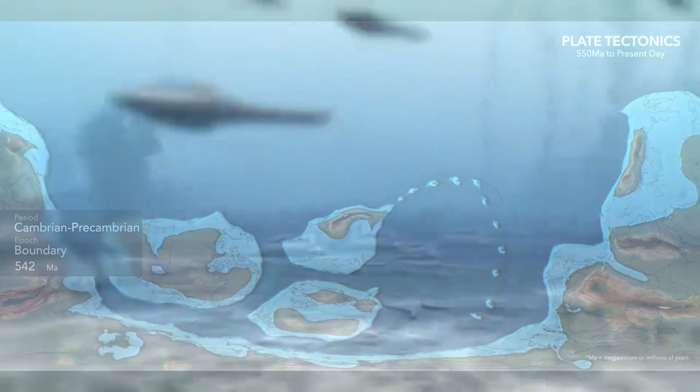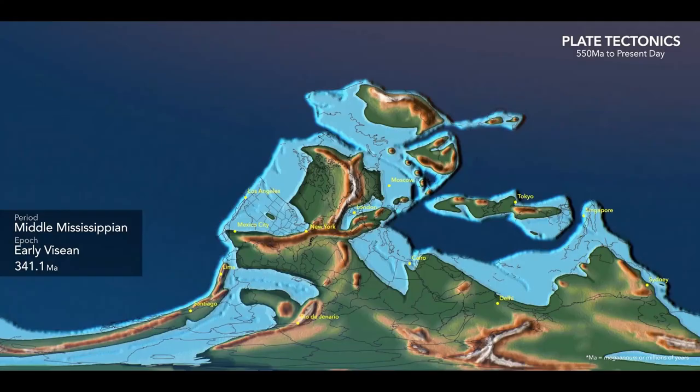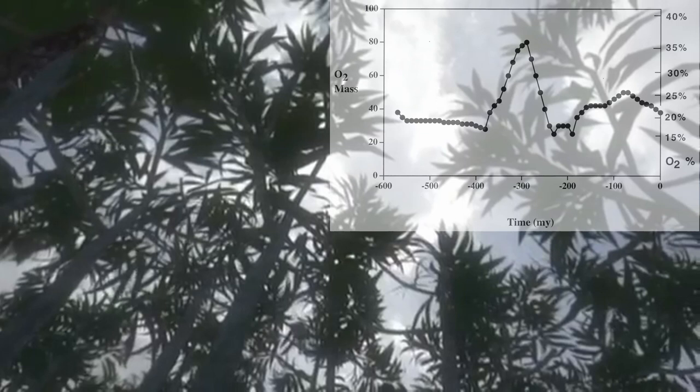We're heading up to the Redwall Limestone formation, which was deposited around 340 million years ago in the Carboniferous period. At this time, oxygen in the atmosphere was at an all-time high — there were tons of land plants, which contributed to the massive increase in atmospheric oxygen. Invertebrates benefited greatly from this oxygen increase.